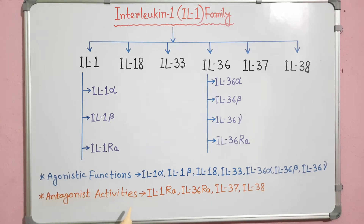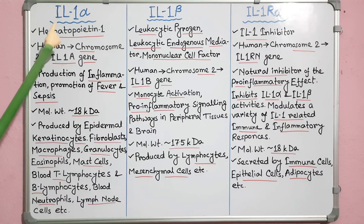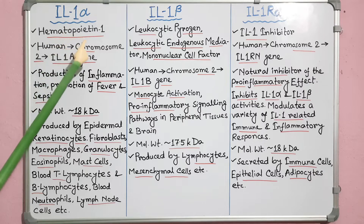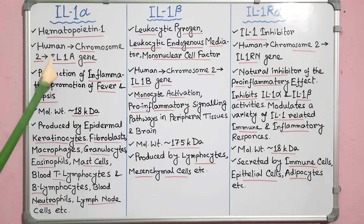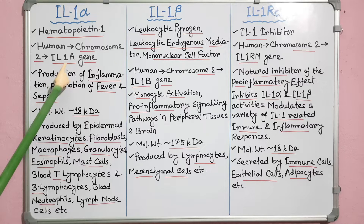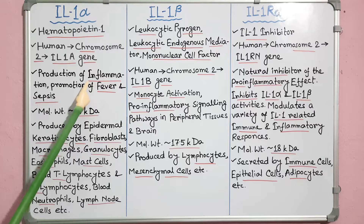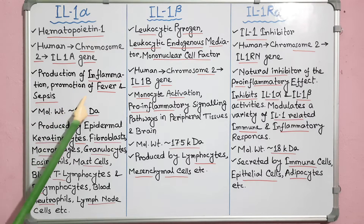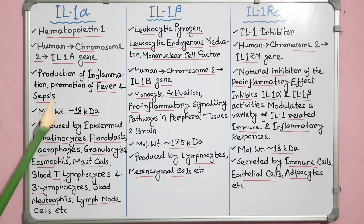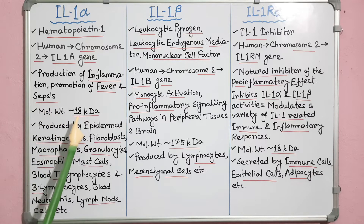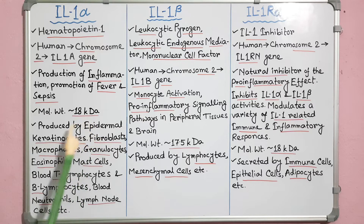Now I will discuss about all these members. Interleukin-1 alpha is known as hematopoietin-1. In humans, it is encoded by the IL-1A gene of chromosome 2. It is responsible for the production of inflammation as well as the promotion of fever and sepsis. The mature IL-1 alpha is about 18 kilodalton protein.